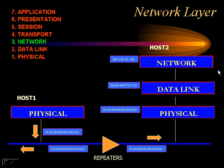What else does the networking layer do? Well, it also translates system names into addresses, is responsible for addressing, determining routes for sending, managing network traffic problems, packet switching, routing, data congestion, and reassembling of data. It all happens here at the networking layer.